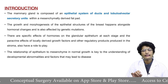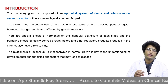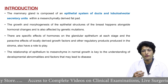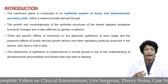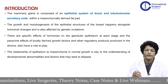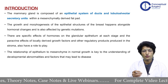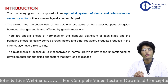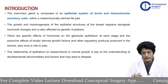The mammary gland is composed of an epithelial system of ducts and lobulo-alveolar units, which is embedded in a mesenchymal derived fat pad. The growth and morphogenesis of these epithelial structures happens alongside the hormonal changes in the body and is also affected by genetic mutations. Various parts of the breast are affected by specific hormones. The relationship of the epithelium to the mesenchyme in normal growth is key to the understanding of developmental abnormalities and factors that may lead to disease.